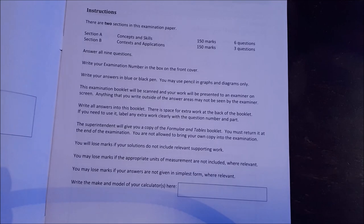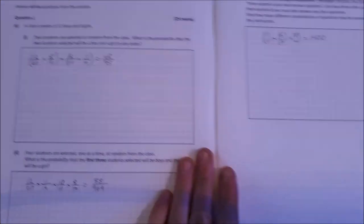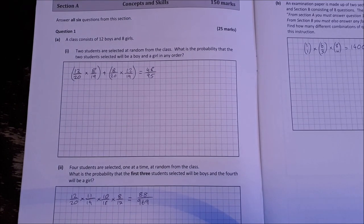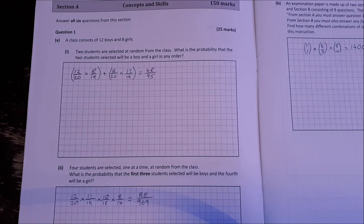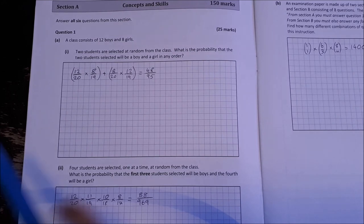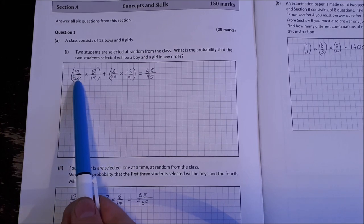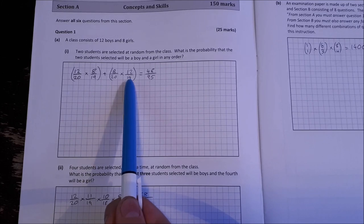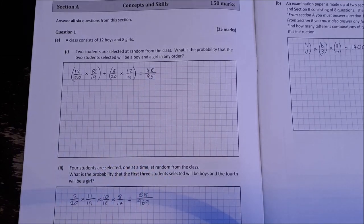So let's get started into question one. Probability question. A class consists of 12 boys and 8 girls. Two students are selected at random from the class. What's the probability that the two students selected will be a boy and a girl in any order? So this one is a boy followed by a girl plus a girl followed by a boy to get 48 over 95.